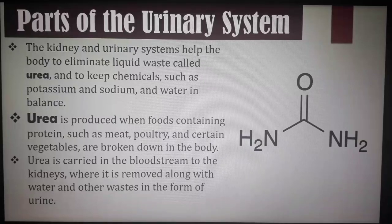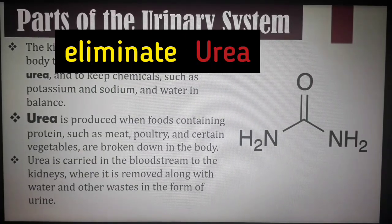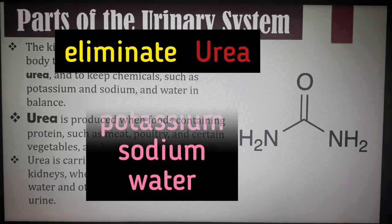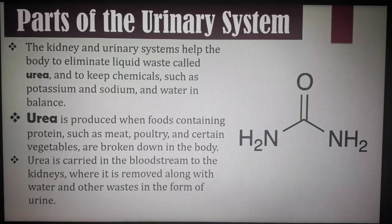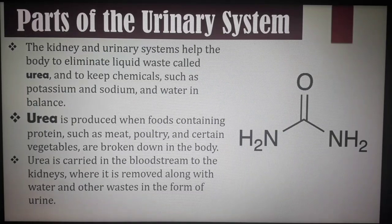The kidney and urinary system helps the body eliminate liquid waste called urea and to keep chemicals such as potassium, sodium, and water in balance. Urea is produced when food containing proteins such as meat, poultry, and certain vegetables are broken down in the body. Urea is carried in the bloodstream to the kidneys where it is removed along with water and other wastes in the form of urine.